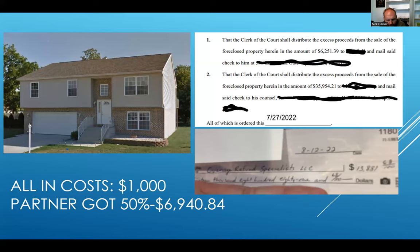This was a fairly fast case — I think it was only two or three months, which is very fast. Usually it's three to four months, sometimes more, especially if you're dealing with estate cases. You can see here there were two checks distributed, and I'll go into why that was in a minute. All in, our costs were about a thousand dollars for our attorney on this one.